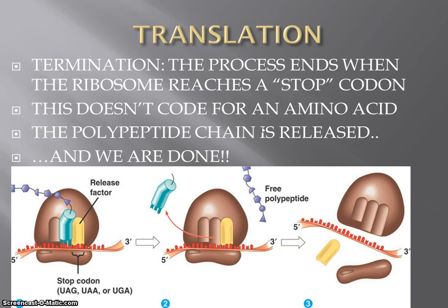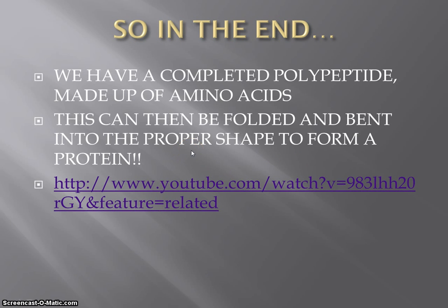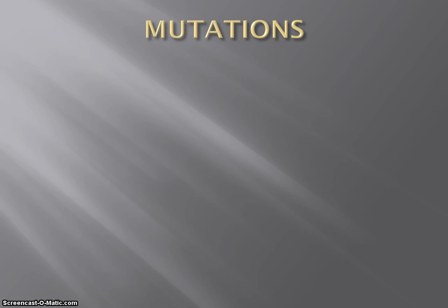Now that we're pros with how proteins are actually synthesized — how we go from DNA to mRNA to an actual polypeptide, an amino acid chain — it's time to play the 'what if' game again. We know how we produce a protein from these sets of instructions, and we know we end up with properly folded proteins. But we're left with yet another question: could there ever be problems or mistakes with this process? And the answer leads us to what are called mutations.